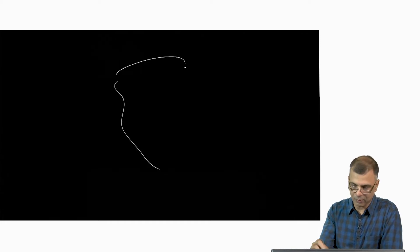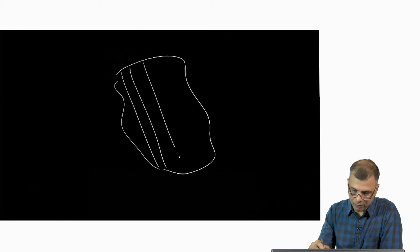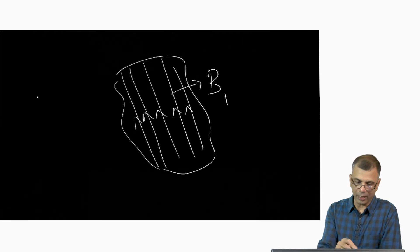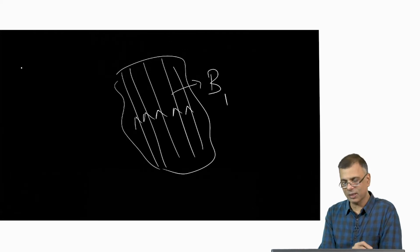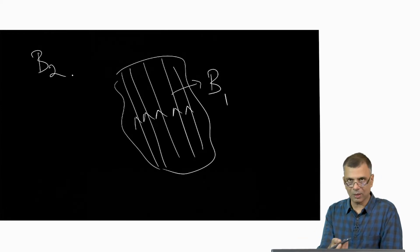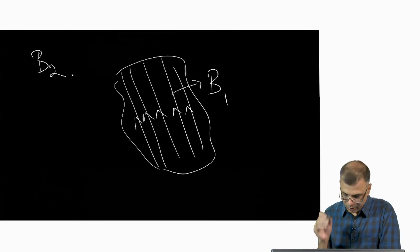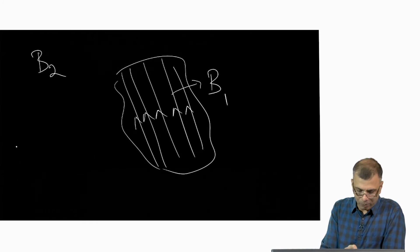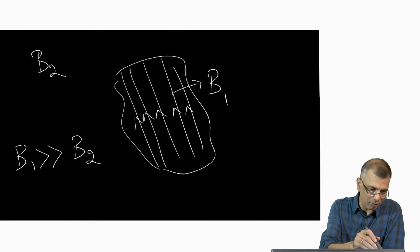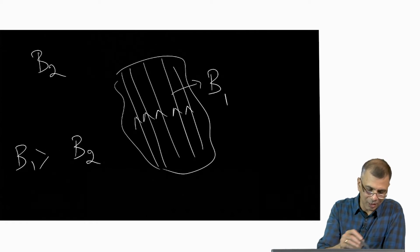Suppose you have a magnetic flux bundle with field B1 inside. Outside, instead of being unmagnetized, let there be another magnetic field B2. Since this is a magnetic flux bundle, B1 is larger than B2.